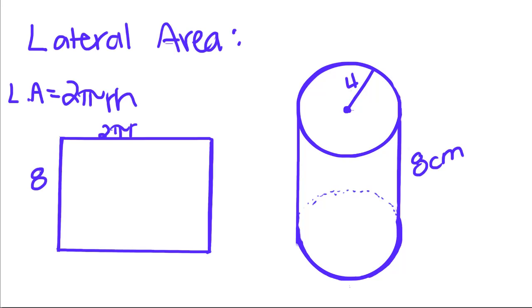Now we're going to talk about lateral area. When we find lateral area of a cylinder, we're finding the area of this part that wraps around the cylinder, the soup can label that wraps around a soup can. So that area corresponds to this rectangle right here.